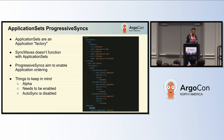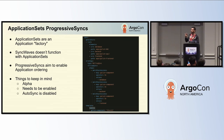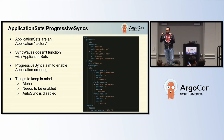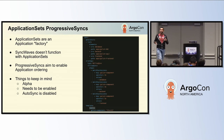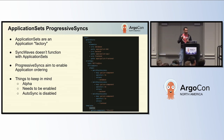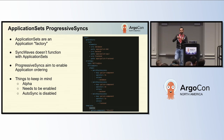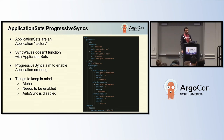Application sets — stepping back from a fundamental standpoint — are meant to be an application factory, meaning it's a templating engine meant to deploy multiple applications using a single manifest. It does that using generators. Application sets have different generators that can generate applications based on key-value pairs, configuration files in your Git repo, and a whole slew of other options.